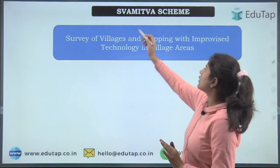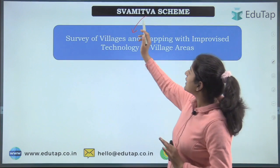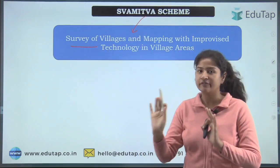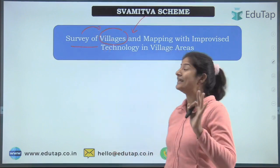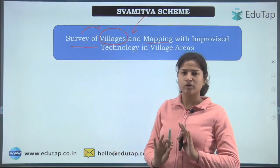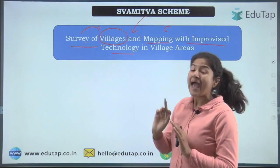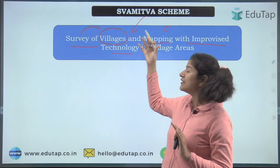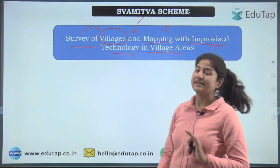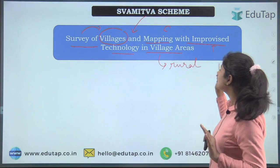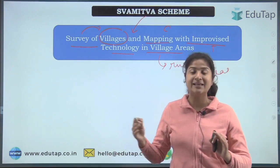First, let's understand the full form of the Swamitva scheme. The full form is: Survey of Villages and Mapping with Improvised Technology in Village Areas. So a survey would be done of villages, and then mapping would be done with the help of improvised technology in rural areas.